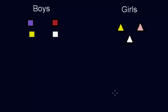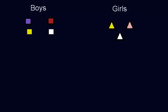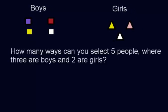Welcome to the next video on combinations. Here's the example I'm going to go over today: how many ways can you select five people where three are boys and two are girls?